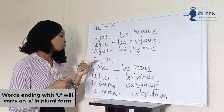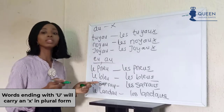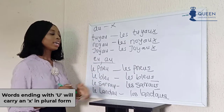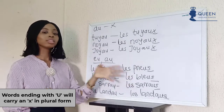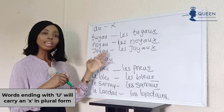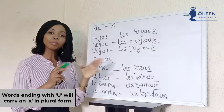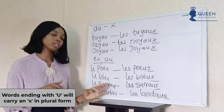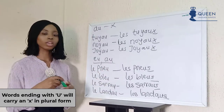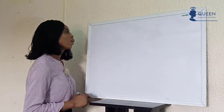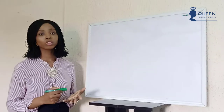These are some of the exceptions where words with -eu or -eau form endings take -s instead. Other than these exceptions, normally the plural form is going to be -x. Let's look at another one.